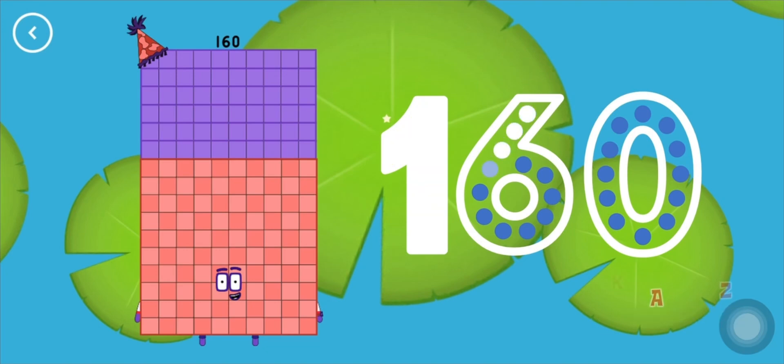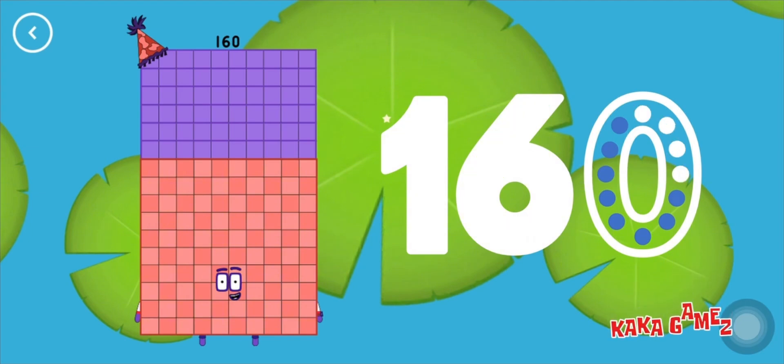Then it's number six. And lastly, number zero. This is Numberblocks 160.